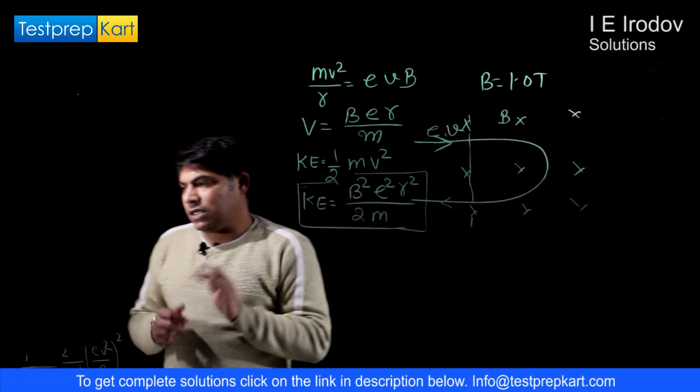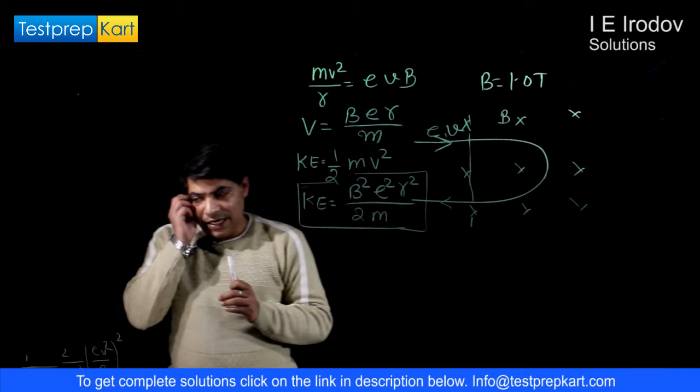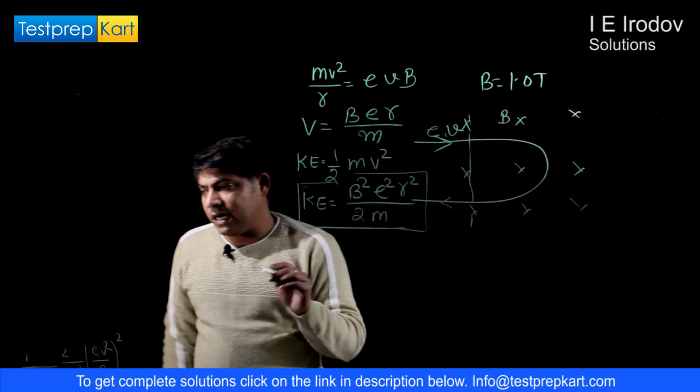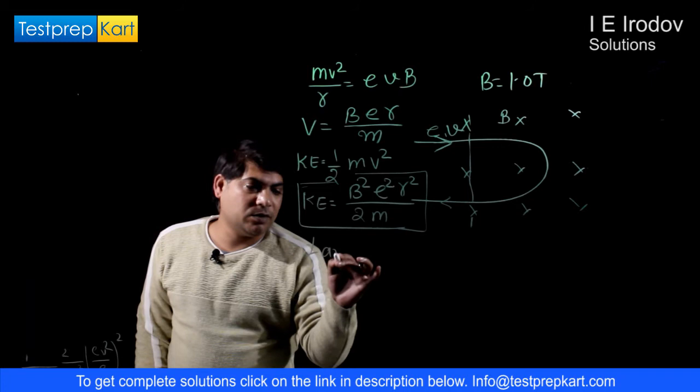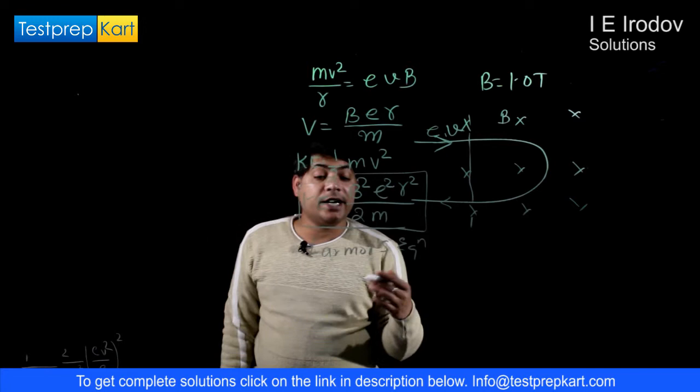Now when proton will move in magnetic field then it will radiate certain amount of energy. And this radiated power can be measured using Larmor's equation. There is one equation, Larmor's equation, that gives us expression of radiated power.